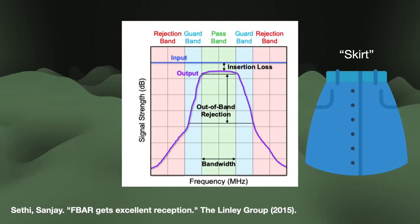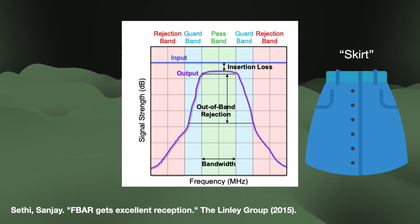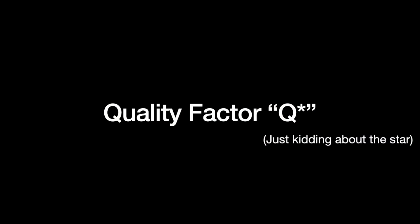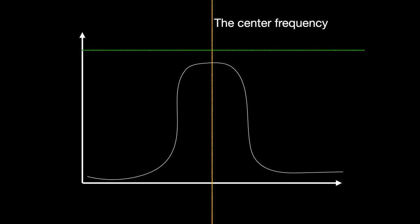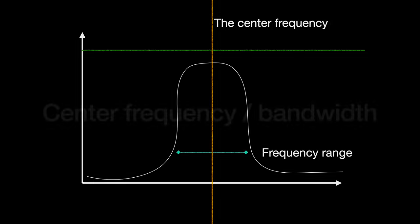The industry uses a single dimensionless number to measure how good an RF filter is: band pass quality factor, or Q. There are other types of Q out there, but this is the one for band pass filters. Q is defined as the ratio of the center frequency — in other words the middle of the skirt — to the low to high end of its frequency range, or the width of the skirt, or bandwidth. So center frequency divided by bandwidth. The higher the Q, the better. The lower the insertion loss, the better.